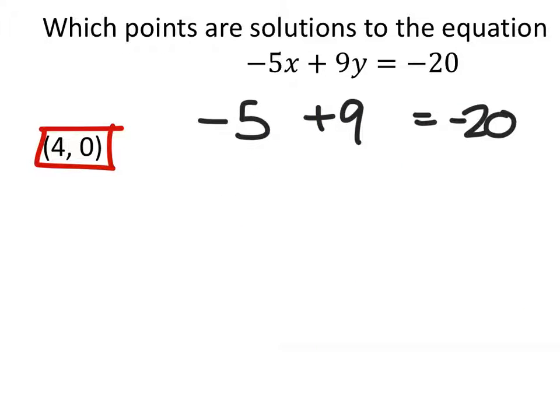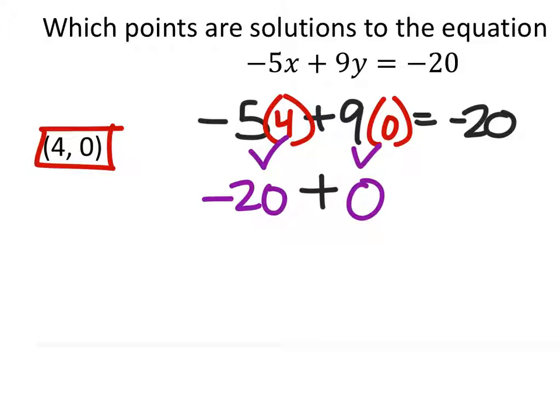Alright, let's try (4, 0) then. So x is 4 and y is 0. So negative 5 times 4 is negative 20. And this would be added to 9 times 0, which is 0.